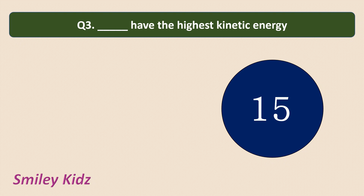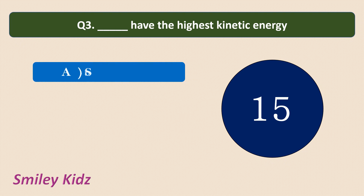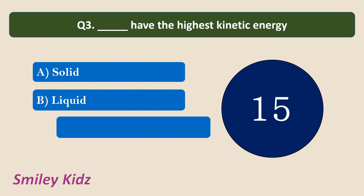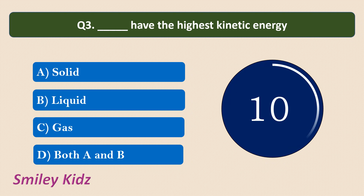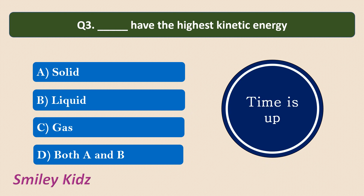Question number 3. Dash have the highest kinetic energy. Options are: solid, liquid, gas, or both A and B — that is solid and liquid. The correct answer is gas. Gases have the highest kinetic energy.